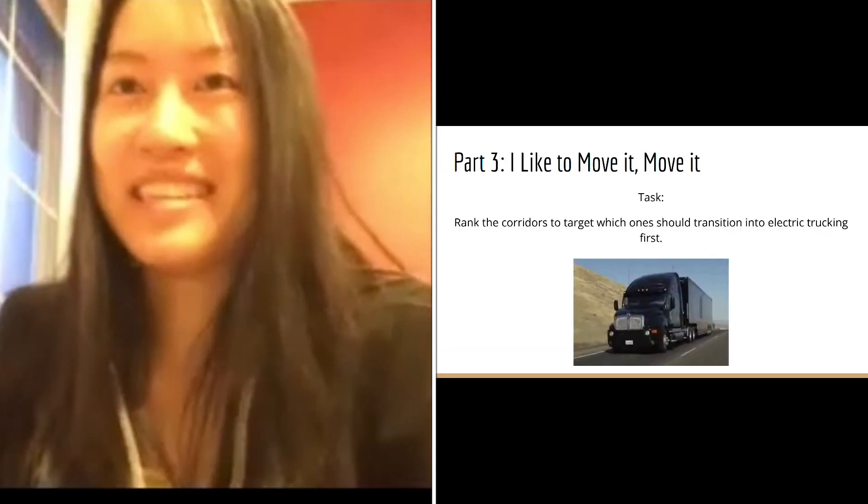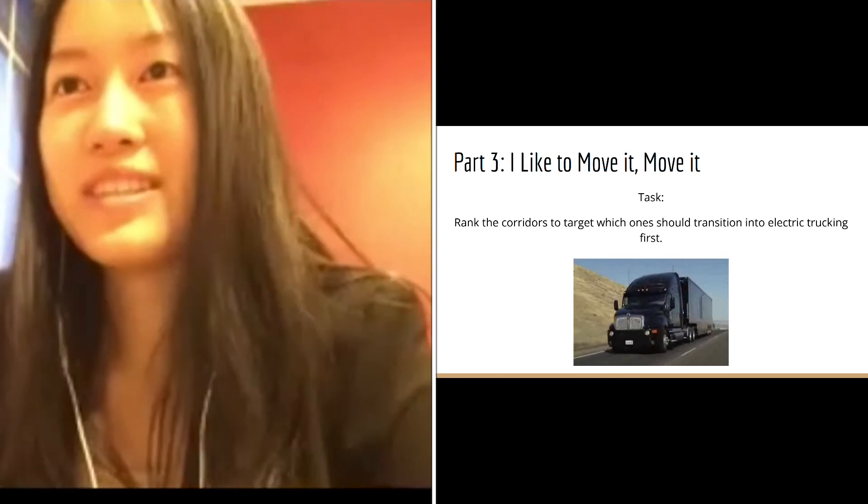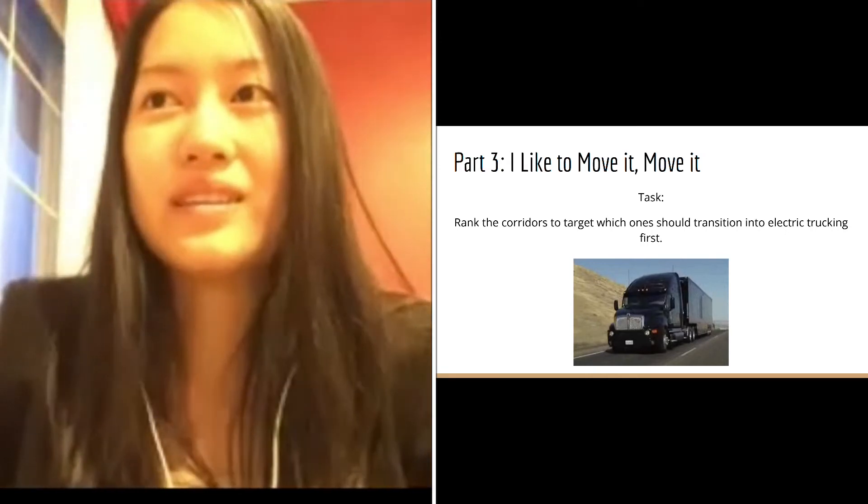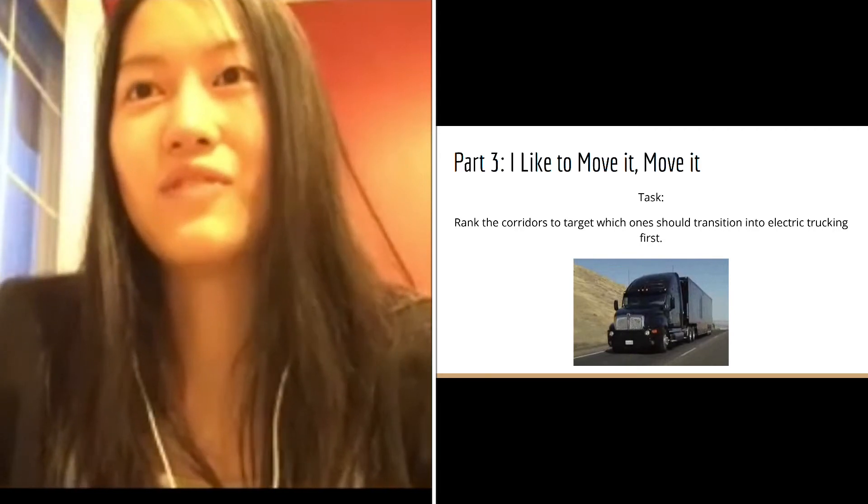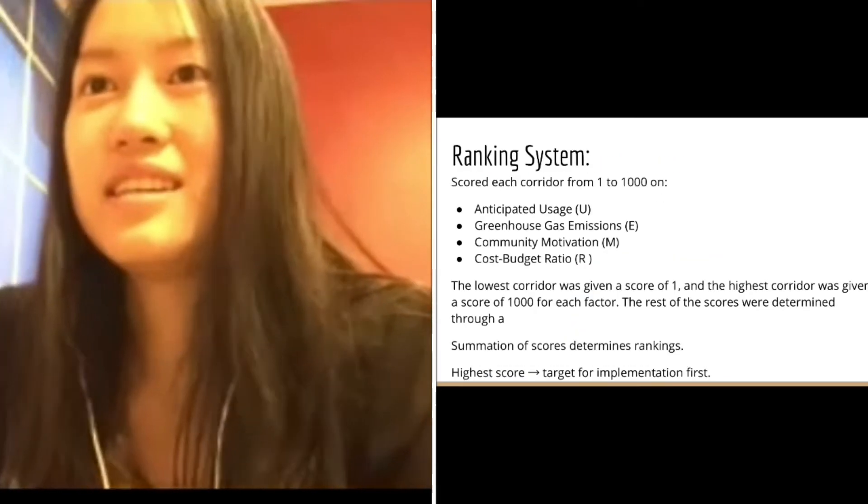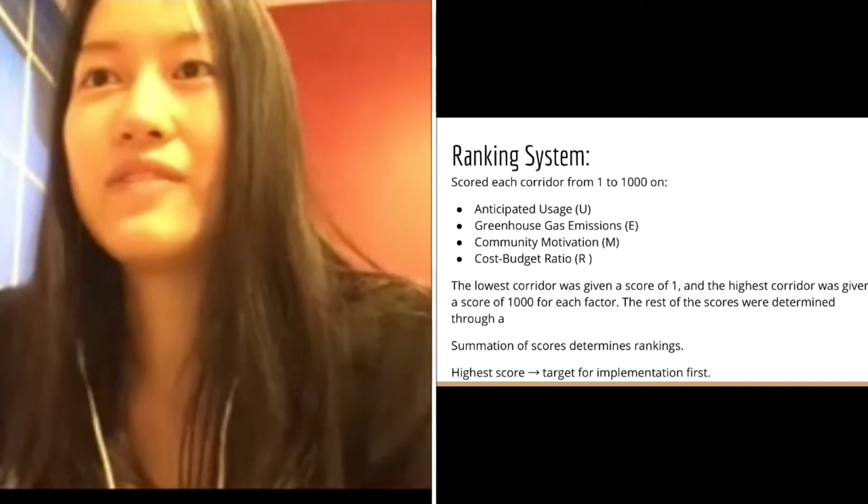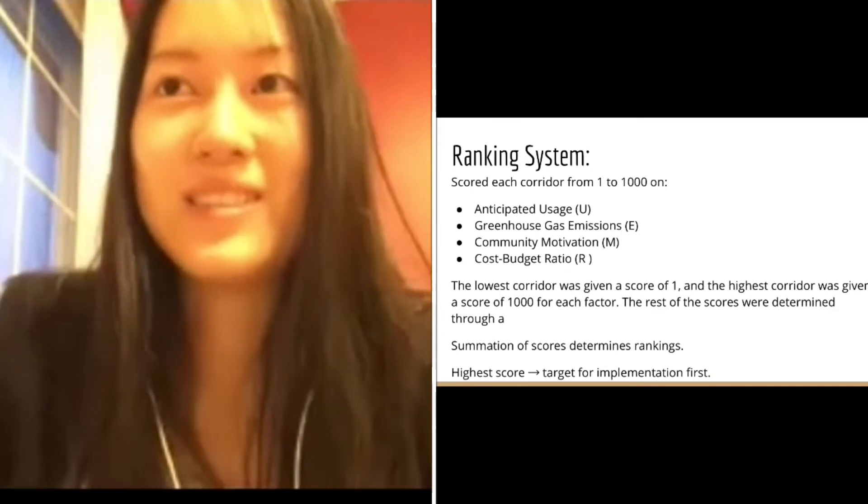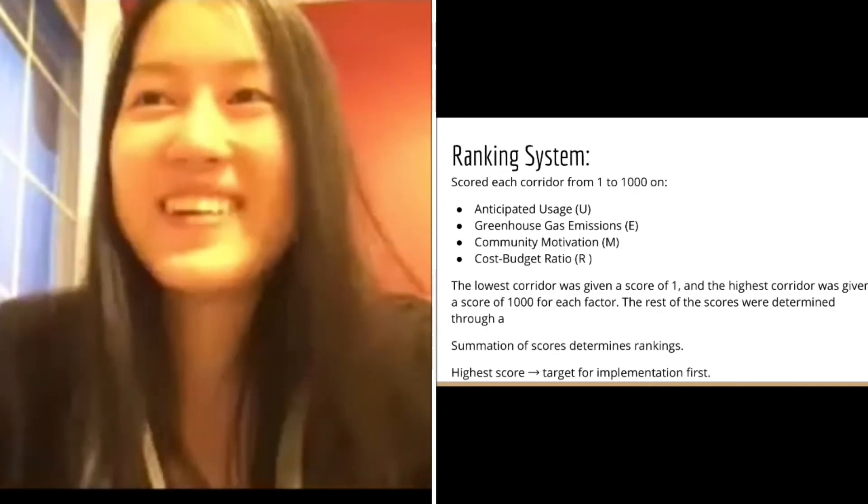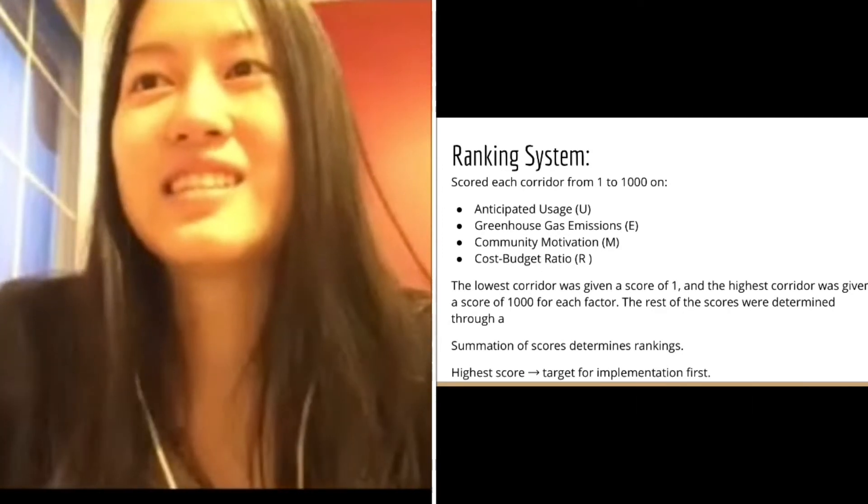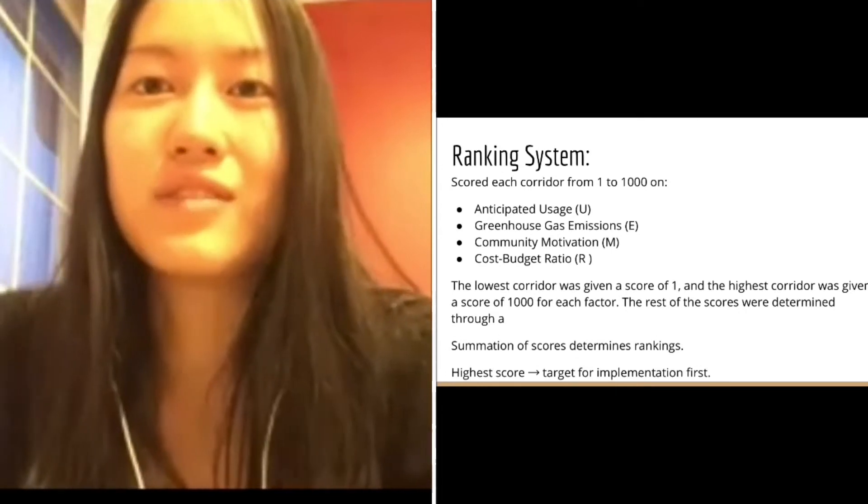Thanks, Brandon. Now we will move on to part three. In part three, we were tasked with creating a model that would allow us to rank which of the trucking corridors in part two should be targeted for development towards electric trucking first. To assess these trucking corridors, we determined the ranking based on the sum of each corridor's respective scores on four factors: anticipated usage, greenhouse gas emissions, community motivation, and cost budget ratio. Each factor score was standardized from one to 1,000 with a higher value indicating that the corridor should be targeted for development the most.